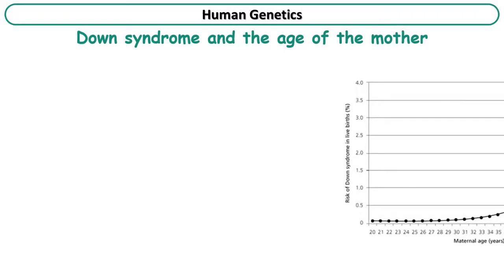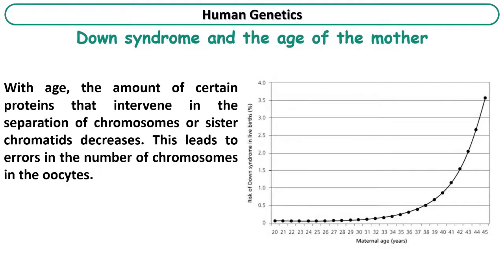Concerning this graph, it shows that the risk of having children affected with Down syndrome increases with maternal age. How do we explain this? With age, the amount of certain proteins that intervene in the separation of chromosomes or sister chromatids decreases. This leads to errors in meiosis and to errors in the number of chromosomes in the oocyte, which increases the risk of having children with chromosomal abnormalities.